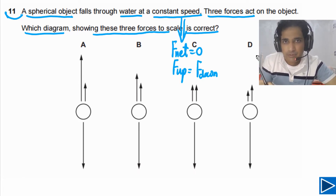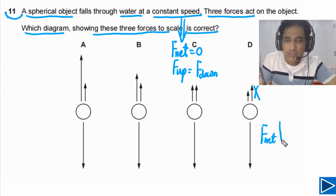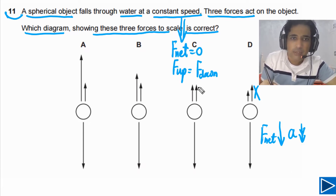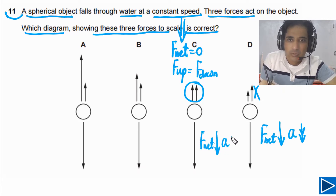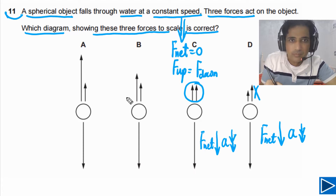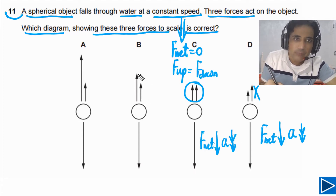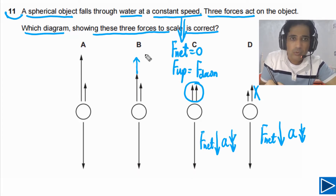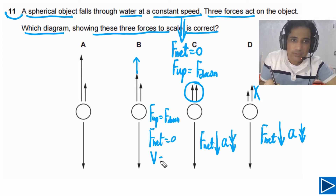If you look at option D, this is not possible because the upward forces are smaller than the downward force, so there is a net force acting downwards meaning the object is accelerating downwards. Looking at option C, the sum of upward forces is also less than the downward force, so there is also a net force acting downwards and the object will be accelerating. For option B, if I compare the arrows, they are almost equal, so we can say upward force equals downward force. In this case F net is equal to zero.